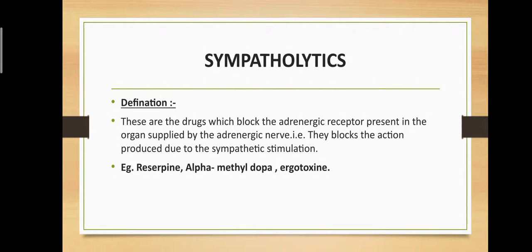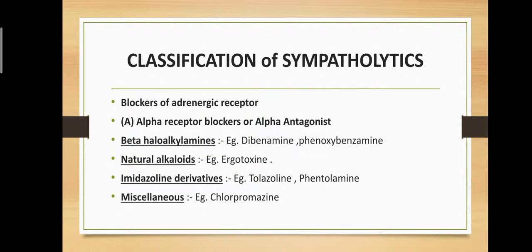Definition: Sympatholytics are drugs which block the adrenergic receptors present in the organs supplied by the adrenergic nerve — that is, they block the action produced due to sympathetic stimulation. Examples include reserpine, alpha-methyldopa, and ergotoxin.